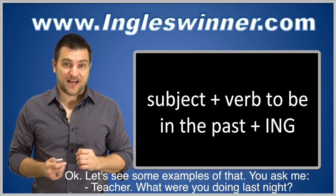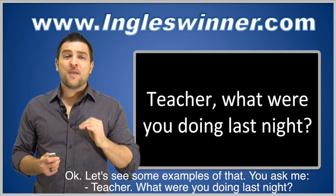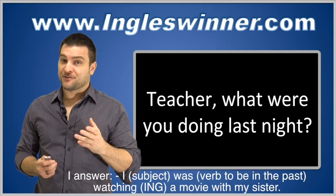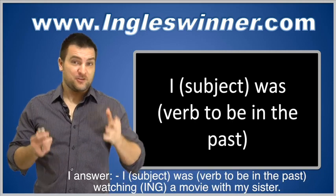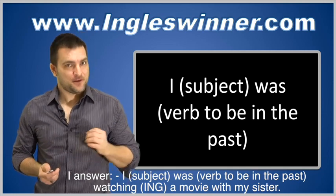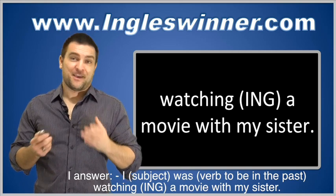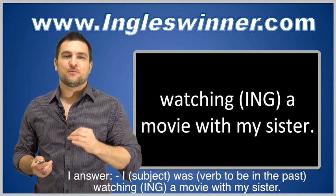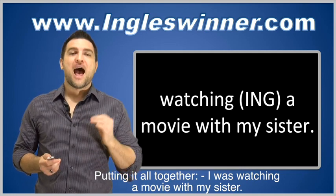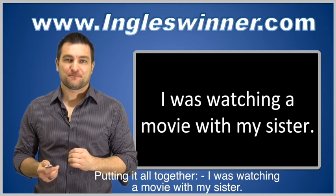Let's see some examples. You ask me: 'Teacher, what were you doing last night?' I answer: 'I' — subject — 'was' — verb to be in the past — 'watching' — with -ing — 'a movie with my sister.' Putting it all together: 'I was watching a movie with my sister.'